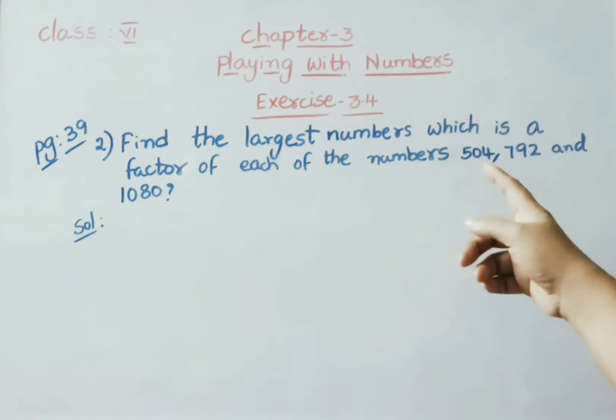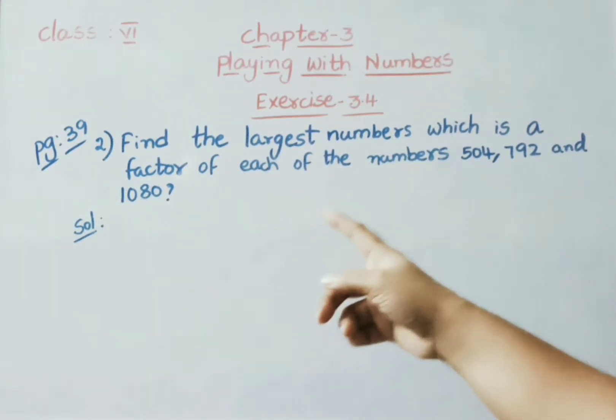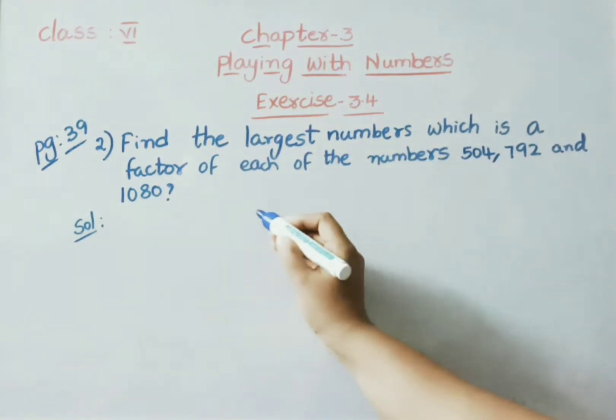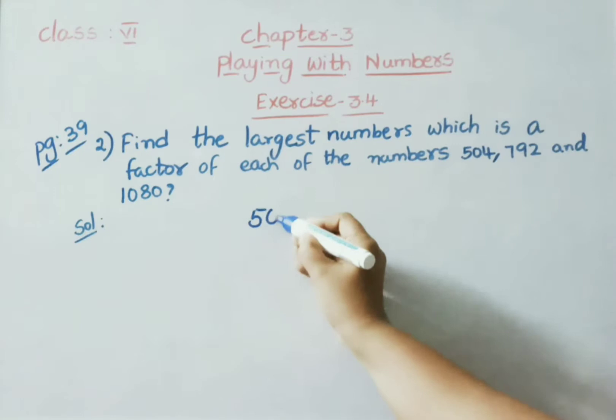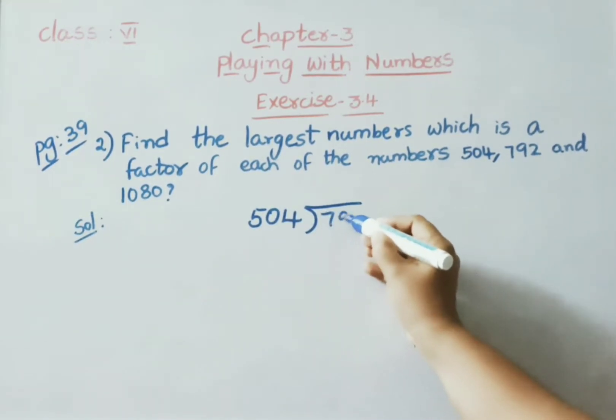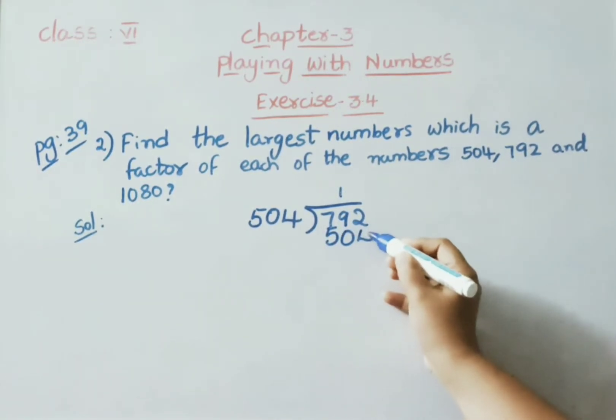Find the largest numbers which is a factor of each of the numbers 504, 792 and 1080. We need to find HCF here for these three numbers. Let us see the solution. 504 going to divide 792. Now subtract.